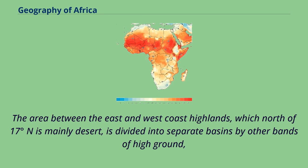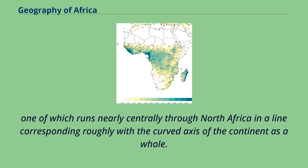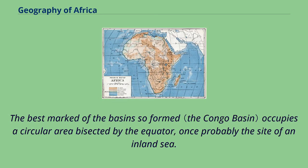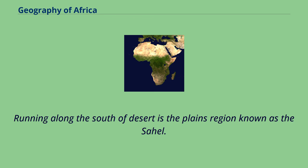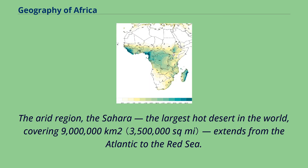The area between the east and west coast highlands, which north of 17 degrees north is mainly desert, is divided into separate basins by other bands of high ground. One of which runs nearly centrally through North Africa along a line corresponding roughly with the curved axis of the continent as a whole. The best marked of the basins occupies a circular area bisected by the equator, once probably the site of an inland sea. Running along the south of the desert is the plains region known as the Sahel. The arid region, the Sahara, the largest hot desert in the world, covering 9 million square kilometers, extends from the Atlantic to the Red Sea.